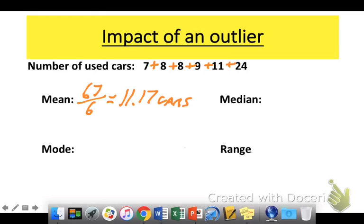So if you recall on the last problem, without the 24, the mean was 8.6. So that 24 really increased the mean quite a bit. But let's see what effect the 24 has on the median.